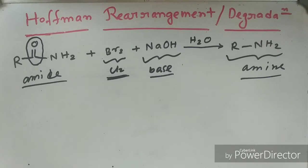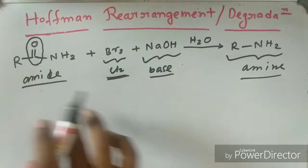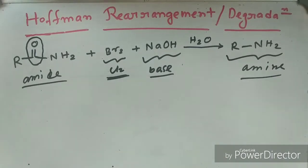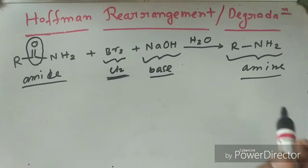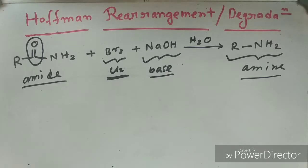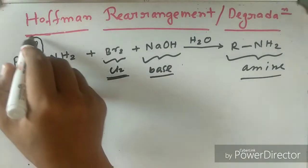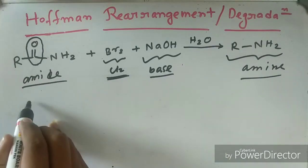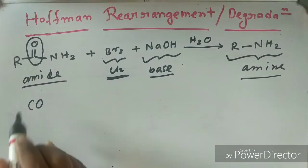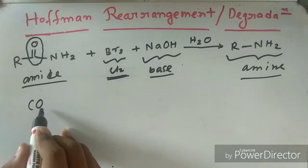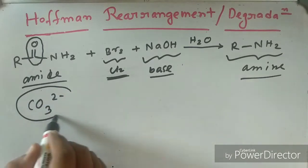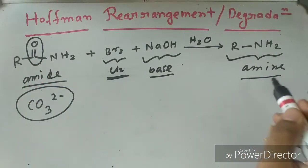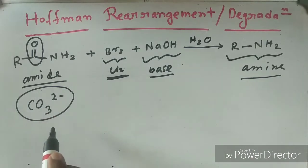This reaction we call Hoffman rearrangement — some kind of rearrangement will occur and also some kind of degradation will occur. One important thing: when CO leaves the system, remember this one — you may face this kind of question in entrance examinations as MCQs — it leaves as CO₃²⁻.